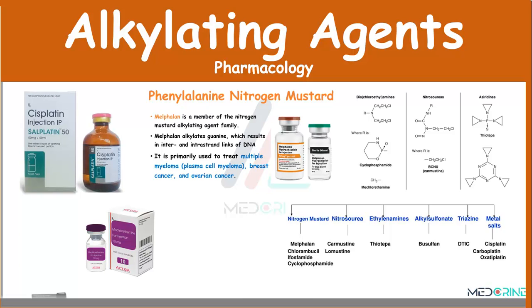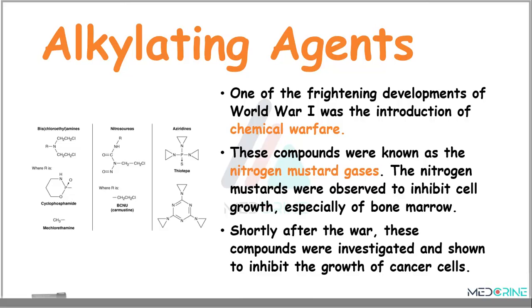Welcome. Today we shall be looking at one of the classes of anticancer drugs known as alkylating agents. One of the frightening developments of World War I was the introduction of chemical warfare. These compounds were known as nitrogen mustard gases. The nitrogen mustard gases were observed to inhibit cell growth, especially of the bone marrow, and shortly after the war, these compounds were investigated and shown to inhibit growth of cancer cells.